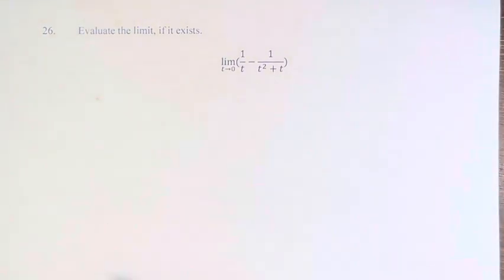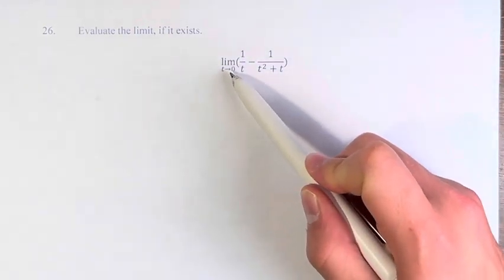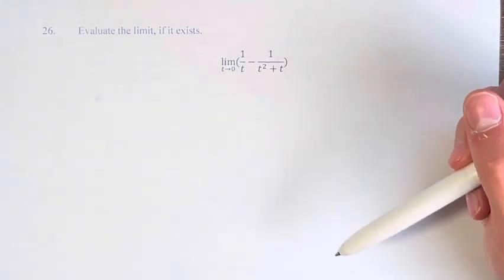Hello, and welcome back to another video. In this problem, we're asked to evaluate the limit if it exists. We have the limit as t approaches 0 of 1 over t minus 1 over t squared plus t.